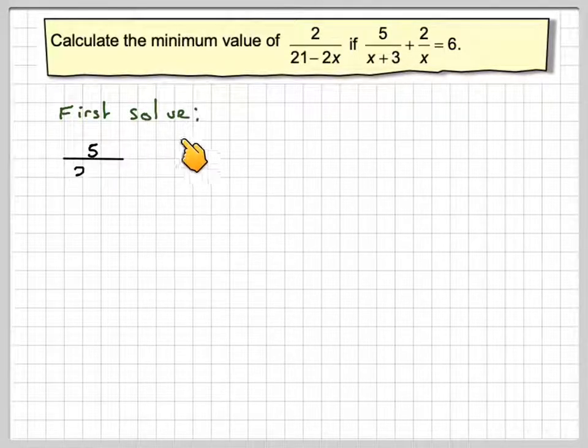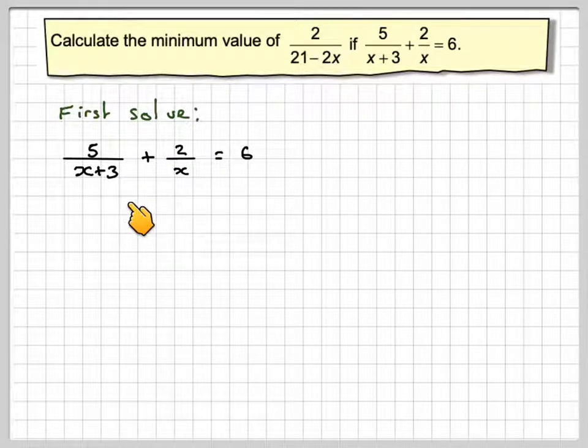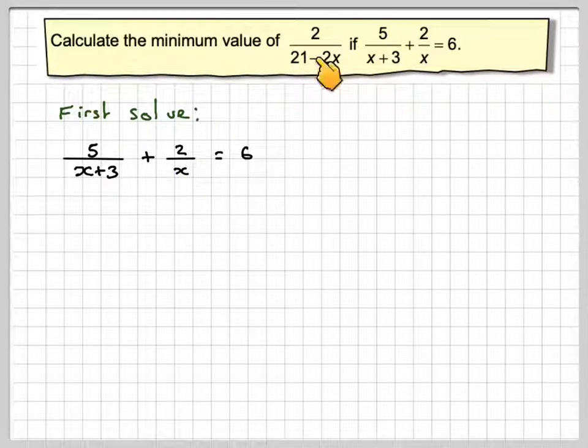So first of all, we've got to solve the equation 5 over x plus 3 plus 2 over x equals 6. Find our values of x, substitute in here and see which one is the smallest.